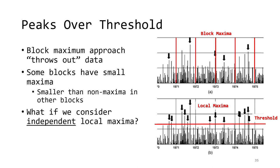Previously, we considered order statistics — more specifically, the sample maximum from non-overlapping blocks. One issue with doing this is that we often are throwing out data. In each block, there are sometimes events that are notable but are not the block maximum. Sometimes these secondary events are larger than some block maxima. However, when we use the first extreme value theorem, we don't consider these events.